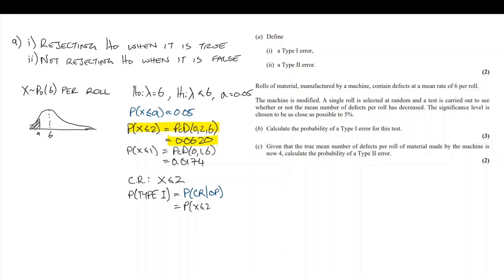That is the probability that x is less than or equal to 2 using lambda equals 6, which we'd actually done already. This is the 0.0620 we were looking for all along. That's the probability of a type 1 error.